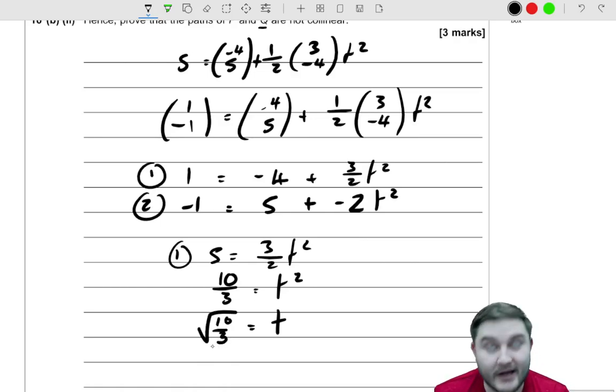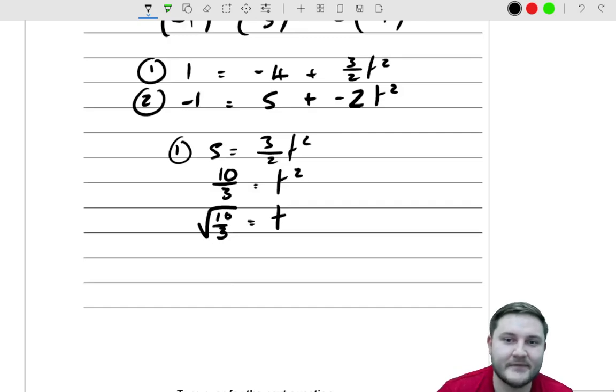Now, technically, it's equal to plus or minus the square root of 10/3. But because we're talking in time, time can't be negative. So we take the positive value, even though it's quadratic. So you always got to link back to that context. I talk about context a lot in these videos.